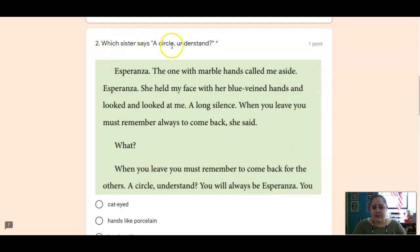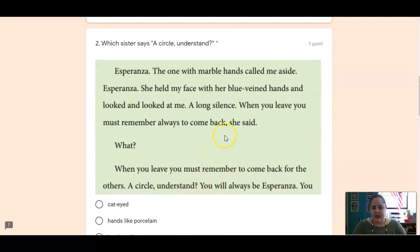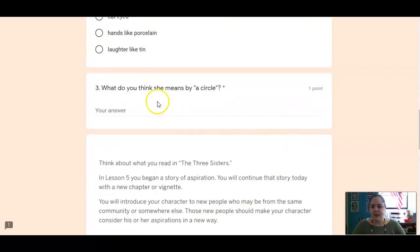Number two, which sister says a circle? Understand. So, same as the reading activities. Find the text that I'm talking about. A circle. Understand. And look for which sister you think it is. It's in here somewhere. So, look for the clues. What do you think she means by a circle? So, the shape, a circle. She says, you must come back. So, what does that mean? How is that kind of like a circle? Think about the shape.